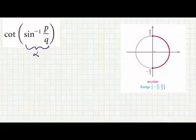We will draw an angle on the right half of the circle with coordinates of its terminal point being x, p with a radius of q. We've now drawn an angle that satisfies the condition sine of alpha equals p over q.